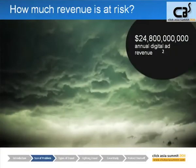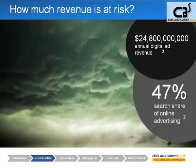So how much revenue is at risk? There are no concrete numbers, but taking a look at the data we can make some educated guesses. Annual digital ad revenue for the year, based on extrapolating the first half of 2010, is $24.8 billion. This includes all digital advertising — social media, display, search, everything. And of all that spend, 47% is going to search. Most of that's Google, clearly. But that's almost half of that $24 billion.